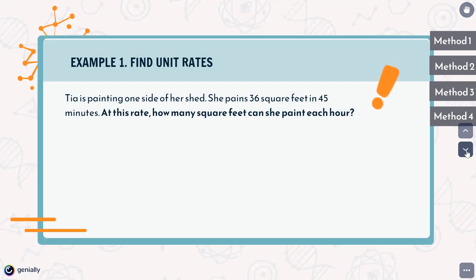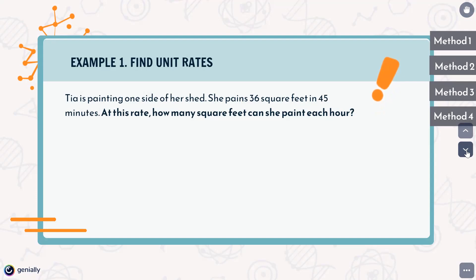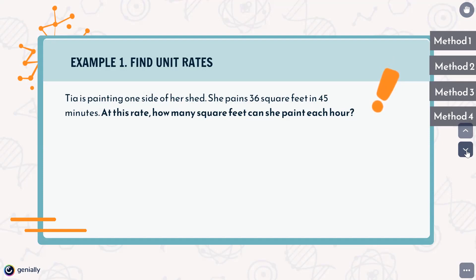A rate is a ratio that compares two quantities with unlike units. For example, how many glasses of water can I drink in an hour — we're comparing glasses of water with hours. Another common one is how many gallons of gasoline a car uses in an hour, comparing hours with gallons. A ratio is a comparison of two quantities in which for every x units of one quantity, there are y units of another quantity. That's the comparison we make between two quantities.